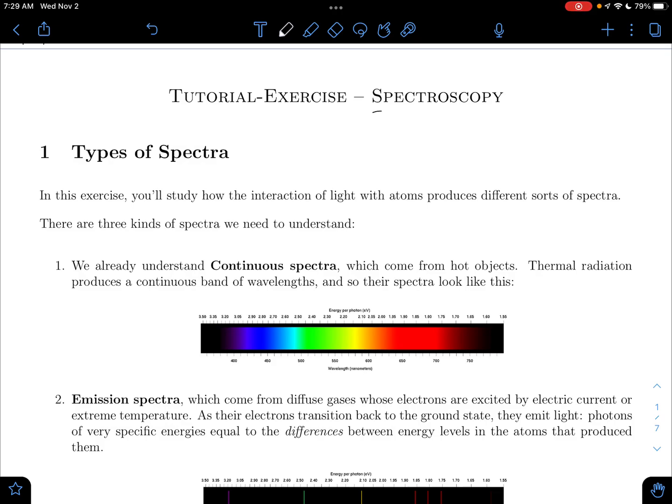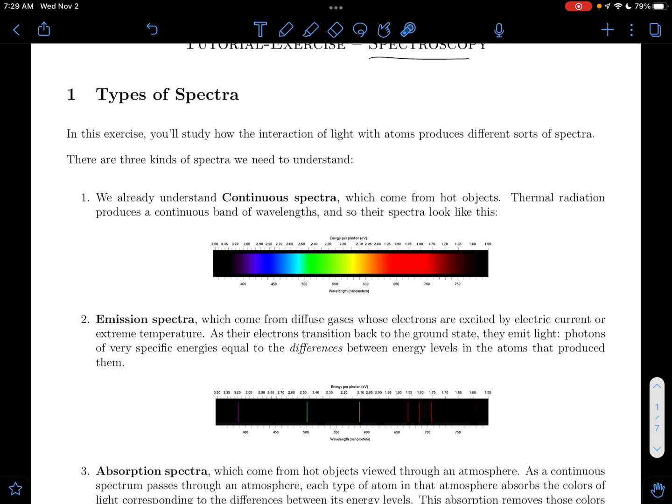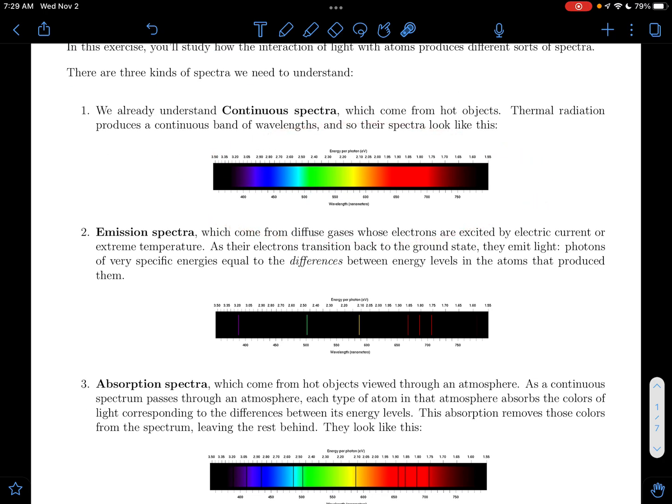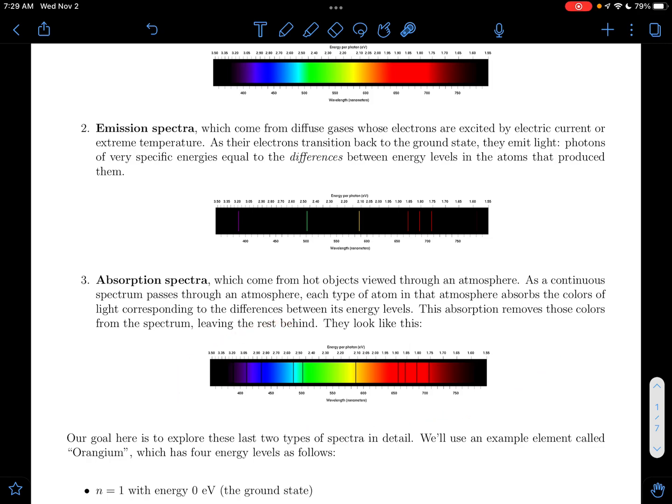Alrighty y'all, today we're taking a look at our lecture on spectroscopy. In this room we're going to be looking a lot at the different types of spectra. Like we have our continuous spectra, this is our emission spectra, and here's our absorption spectra.